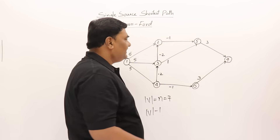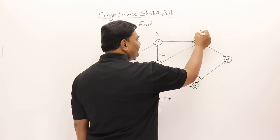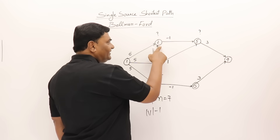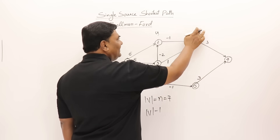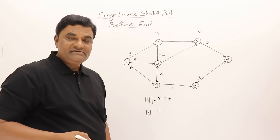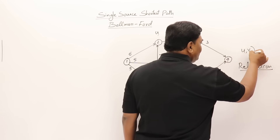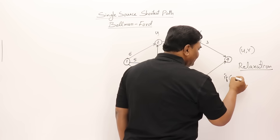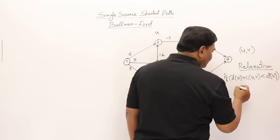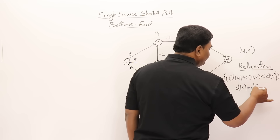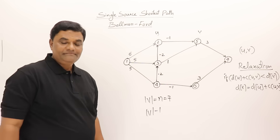What is relaxation? For any pair of vertices u and v with an edge between them, check if the distance of u plus the cost of edge (u,v) is less than the current distance of v. If so, update the distance of v to distance(u) plus cost(u,v). That is what relaxation means — I will explain further while solving the example.